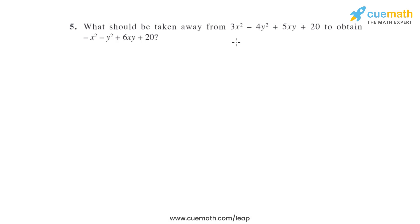Question 5 of this exercise says: What should be taken away from 3x² - 4y² + 5xy + 20 to obtain -x² - y² + 6xy + 20? So let us assume that the term we are taking away is a question mark.